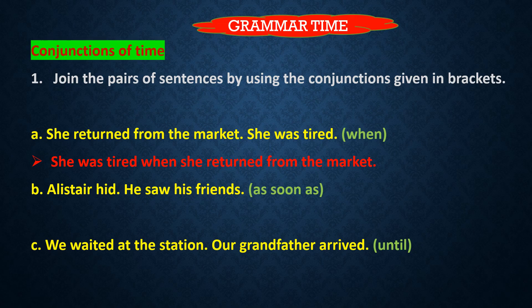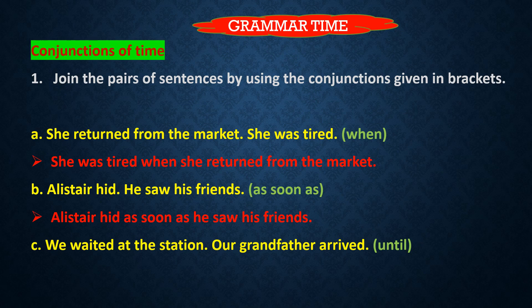Now see part B: 'Alistair hid. He saw his friends.' The conjunction of time given in the brackets is 'as soon as.' We have to use 'as soon as' to join these two sentences. The joined sentence is: 'Alistair hid as soon as he saw his friends.'